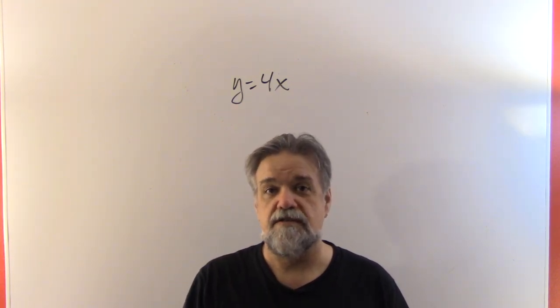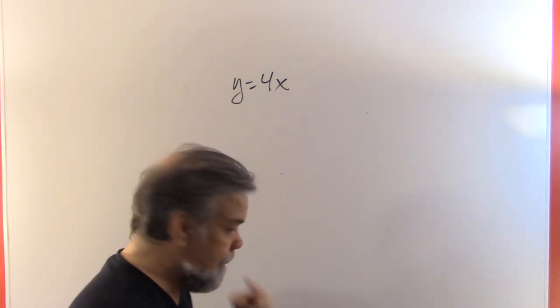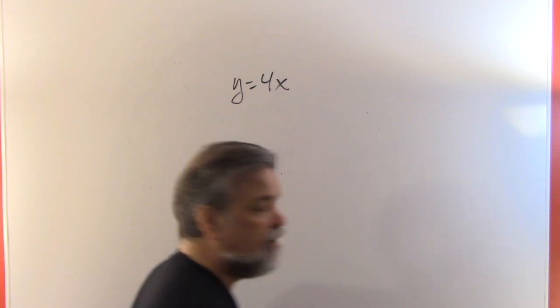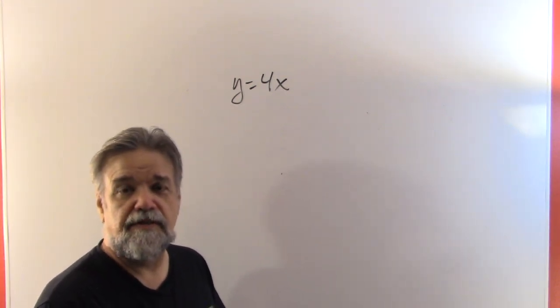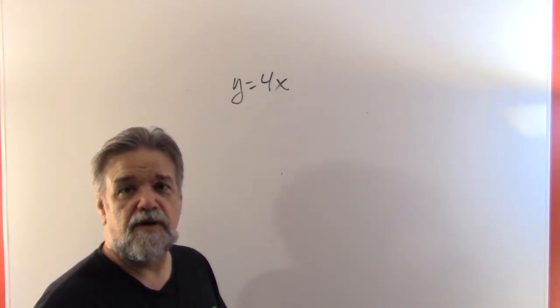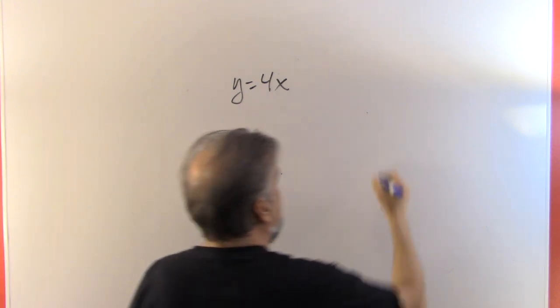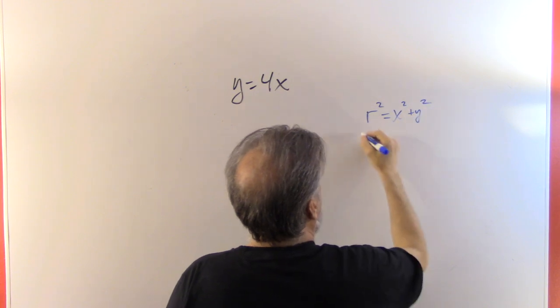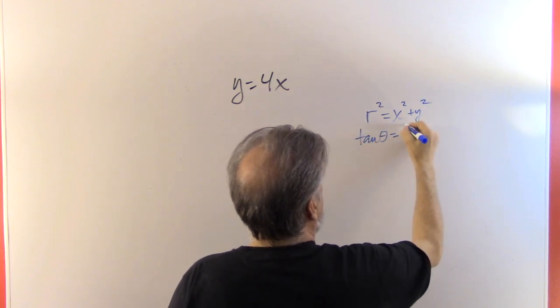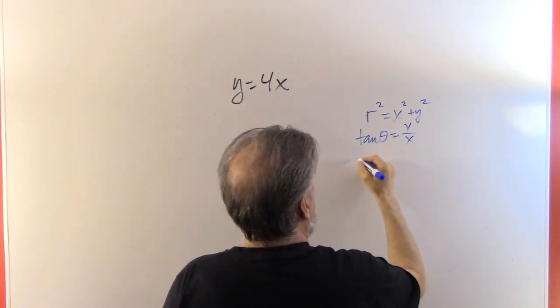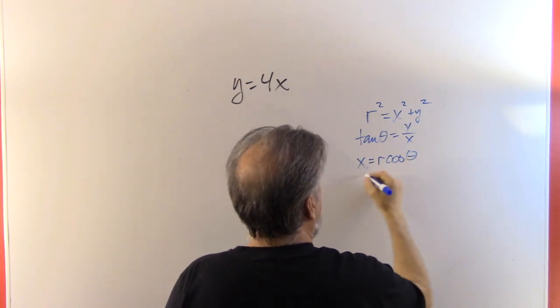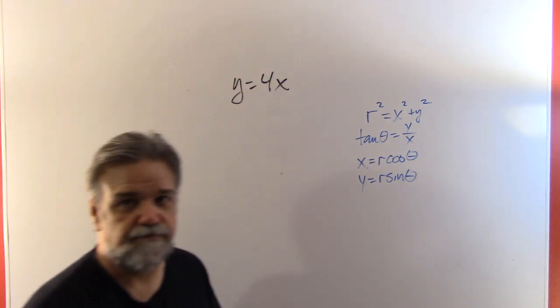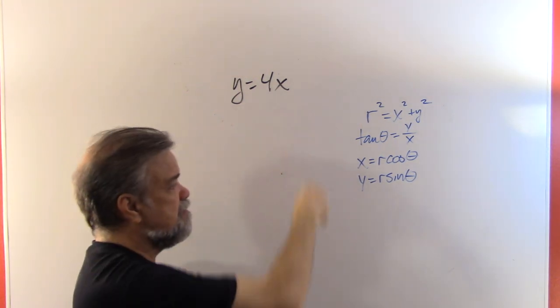So what's the constant? Well, I guess in order to do this, we need to remember what our four identities are that help us go from polar to Cartesian and Cartesian to polar. That is r squared equals x squared plus y squared. The tangent of theta equals y over x. x equals r cosine of theta and y equals r sine of theta. This is what we're going to use.